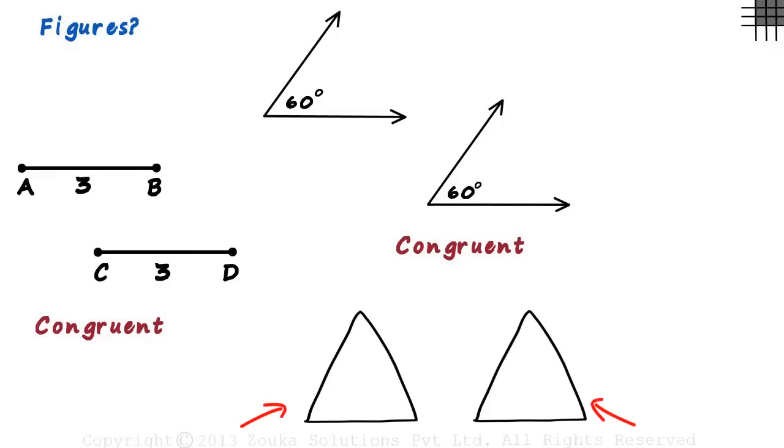We can say that these two triangles are congruent if all the matching sides and all the matching angles are congruent. We will understand more about congruency of triangles in the coming videos.